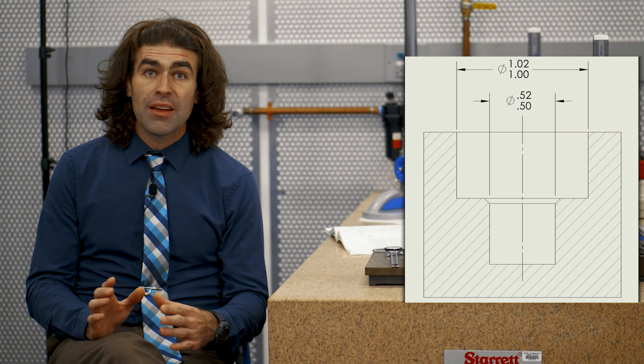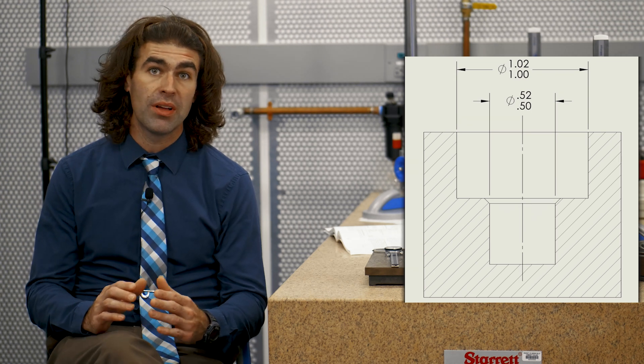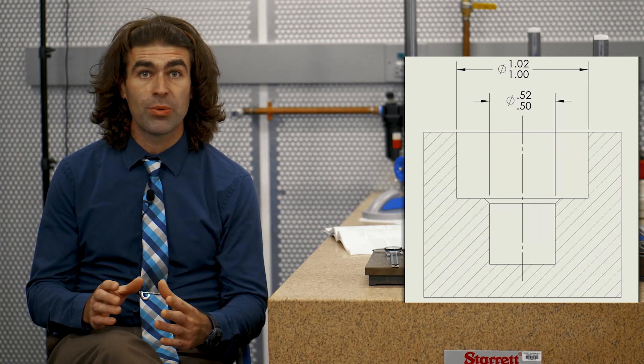So what this means, and I'll put another figure up, if we toleranced these two diameters to fit in this stepped hole, even if we left allowance for both diameters, it might not fit depending on the amount of variation allowed between the diameters. So where's that variation come from?